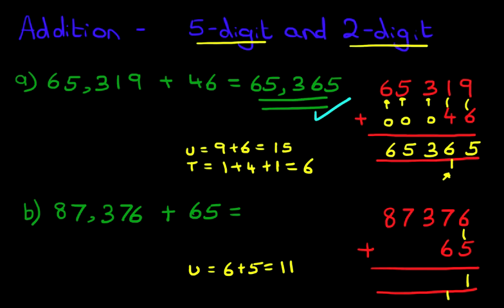Now we're going to add the tens column. We've got 7 plus 6, don't forget the 1 over here that we carried over, plus 1. 7 plus 6 is 13, plus 1 is 14. So let's write that down. We've got 1 here and 4 over here.